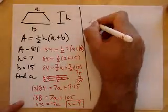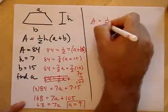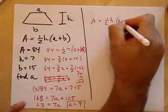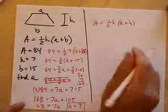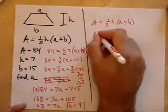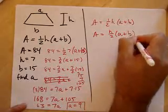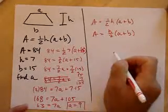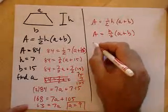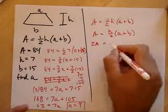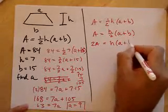A equals one half h times a plus b, right? Isn't that the same thing as A equals h over 2 times a plus b? I think it is. And can I multiply both sides by 2? Sure, I can. So I get 2A equals h times a plus b.